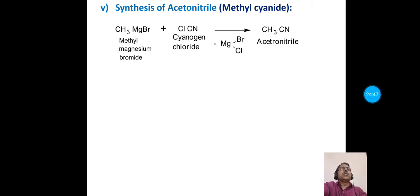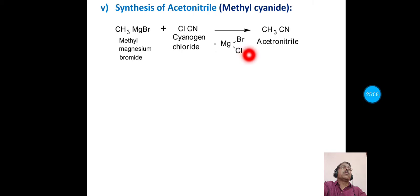The next synthetic application is synthesis of acetonitrile (methyl cyanide). Methyl magnesium bromide is treated with cyanogen chloride, forming acetonitrile as the main product and magnesium bromo-chloride as a side product.